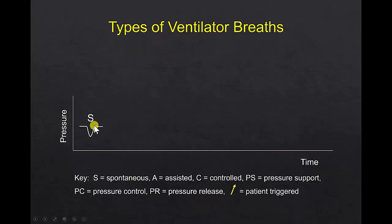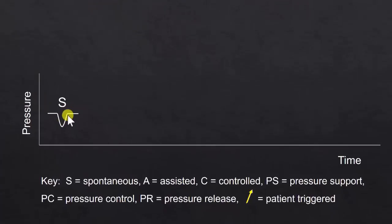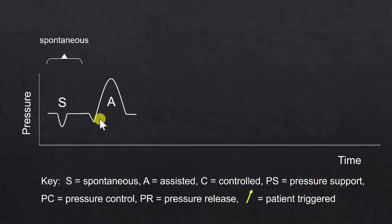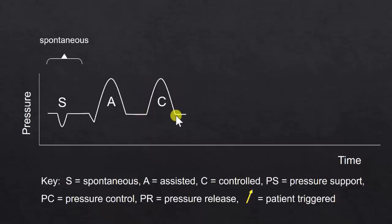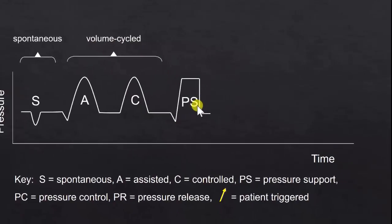Types of ventilator breaths include a spontaneous breath, where the patient breathes through the ventilator circuit — this is a negative pressure breath. There are two types of volume-assisted breaths: an assisted breath, where the patient initiates the breath and once recognized the machine delivers a tidal volume, or a controlled breath, where a timer delivers a tidal volume at a set timing interval. These are called volume-cycled breaths. There are also pressure-cycled breaths — a pressure support breath is where the patient initiates the breath and the ventilator maintains the breath at a target pressure for the duration of the patient's effort.